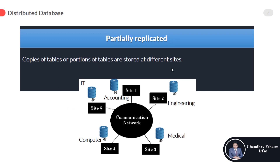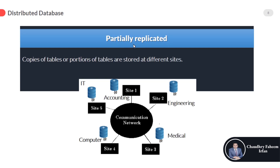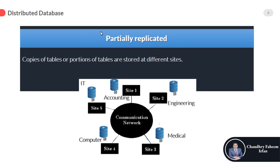Partially replicated means copies of tables or portions of tables are stored at different sites. For example, I can store accounting data and engineering data at site 1, or take some tuples or rows and store them at site 1. This avoids the storage disadvantage of full replication, as partially replicated design consumes less storage. In this scheme, you replicate only a few tables or parts of a table.